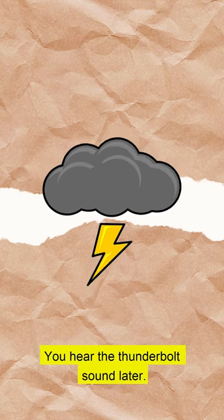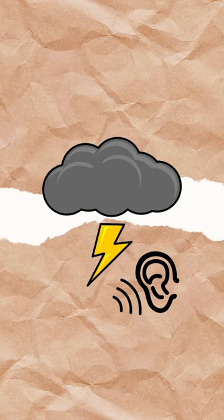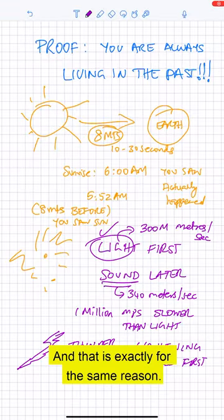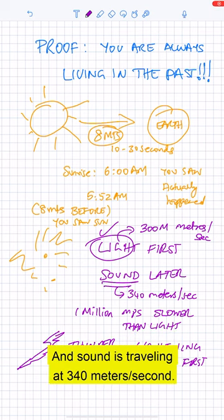You will actually see that lightning strikes first and then you'll notice that then you hear the thunderbolt sound later. And that is exactly for the same reason. Light is traveling at 300 million meters per second and sound is traveling at 340 meters per second. So pretty much everything that you're seeing here has already happened.